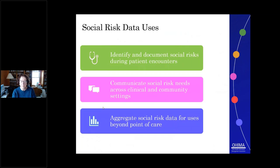When we think about social risk, there are a number of data uses. Primarily in the clinical care setting, we are looking at identifying and documenting those risks. We also realize that many social risks are addressed outside of the clinical care setting through community interventions and resources, so it's important to be able to communicate between both clinical and community settings. And finally, as with all types of health care needs, we want to be able to aggregate this data beyond the point of care — looking at things like how social risk impacts public health, population health management, and also how reimbursement can be used to compensate appropriately for addressing social risk needs.